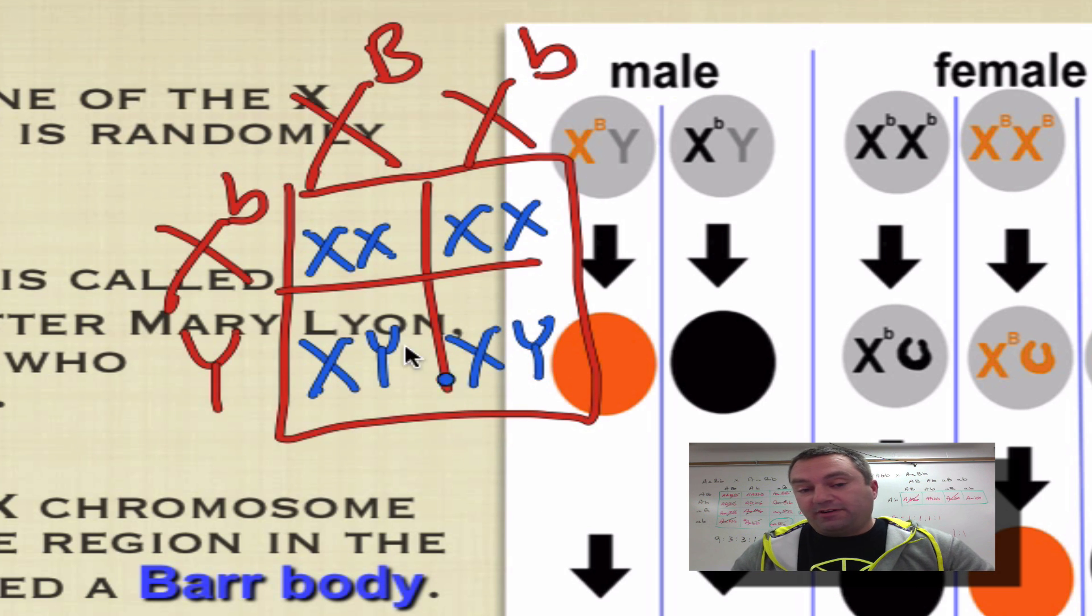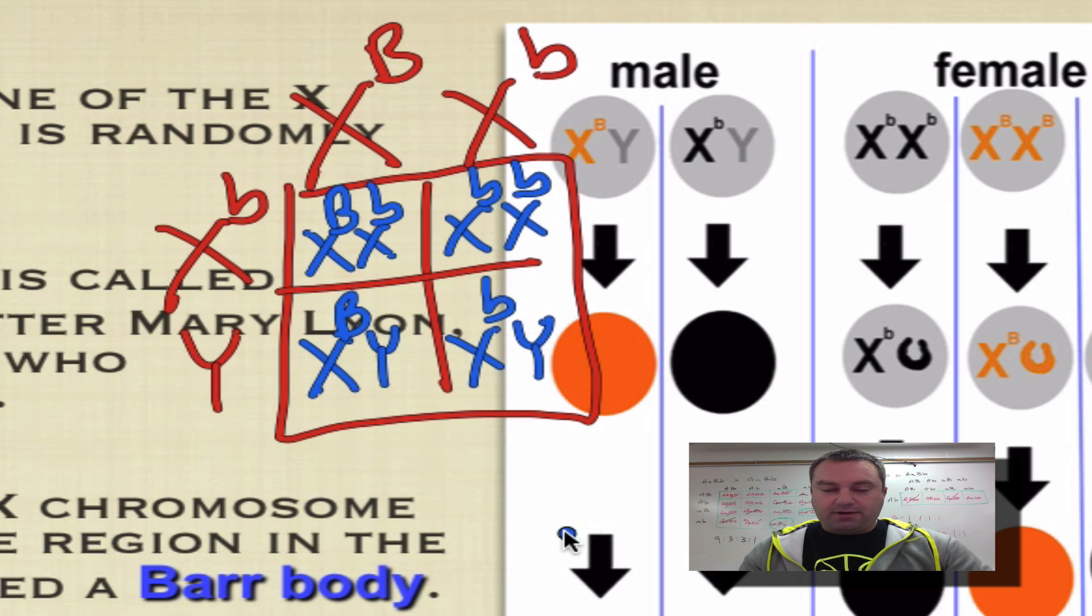So there you've got your 50% male, 50% female. Now let's fill in the superscripts. Big B, little b, little b, little b, big B, little b.